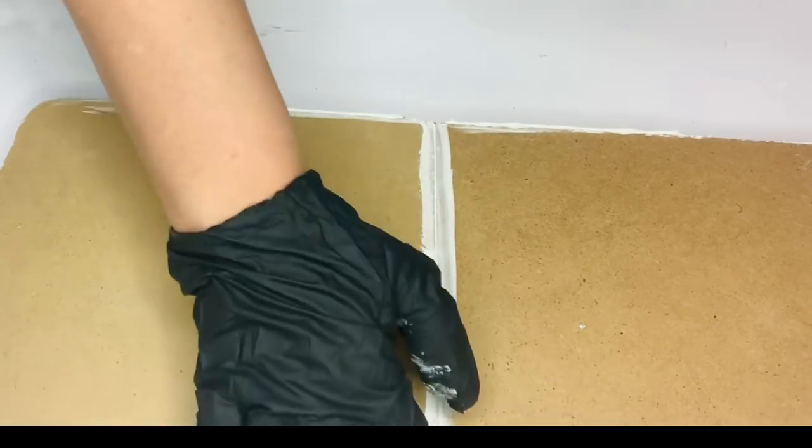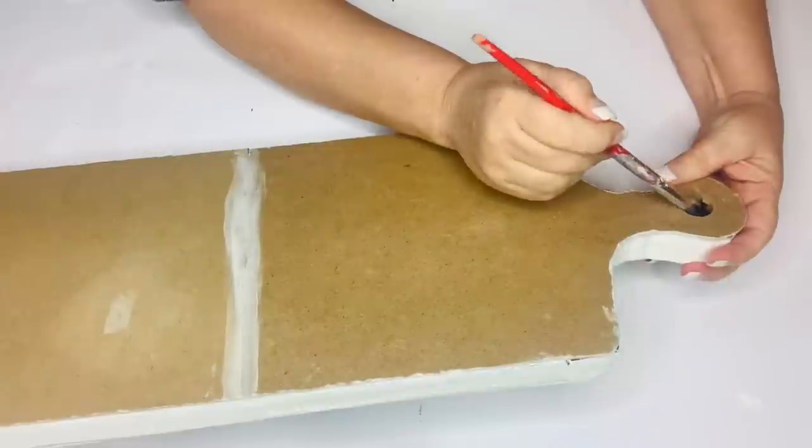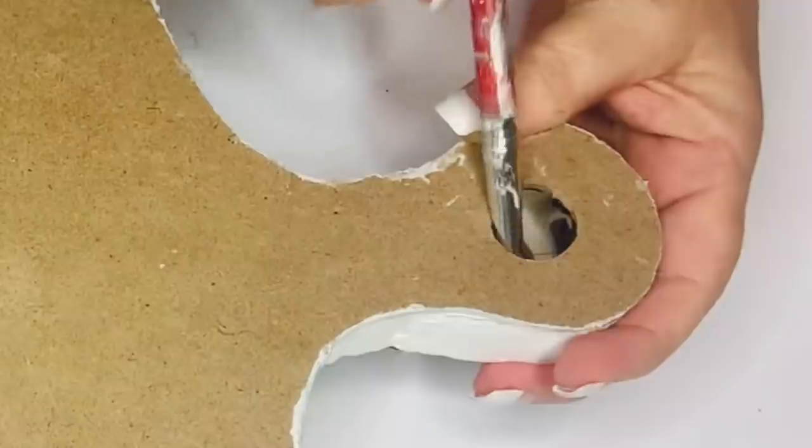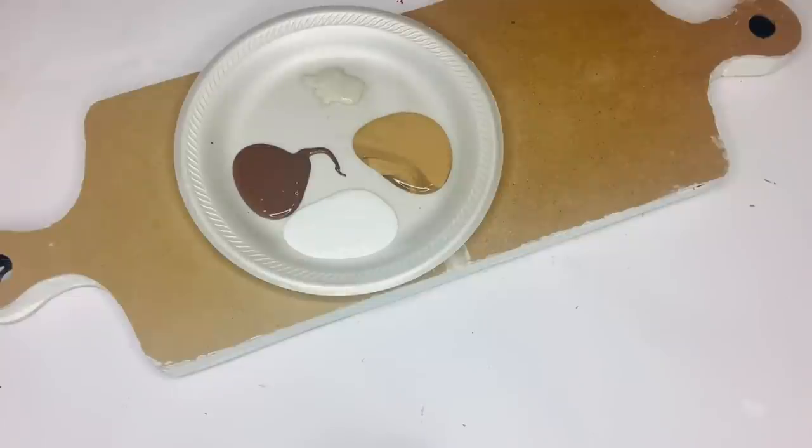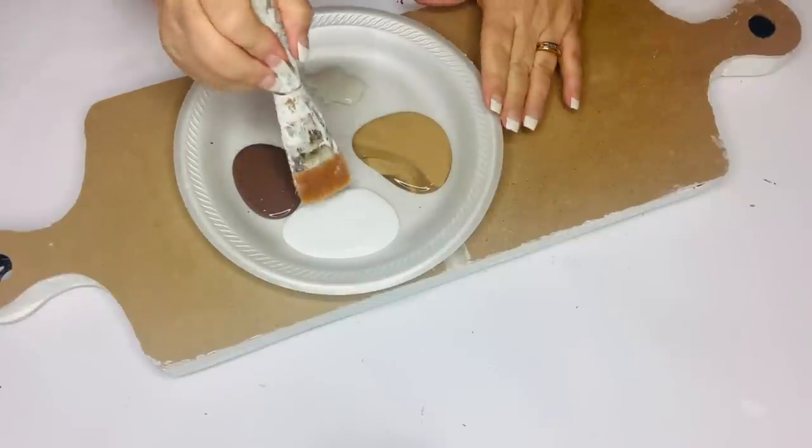So once I get everything all sealed and my mastic is completely dry, I'm going to take some black chalk paint. Doesn't matter if it's chalk paint or whatever. But because those little holes, you can still see the Jenga pieces. So I'm going to just paint that completely black and it goes away.